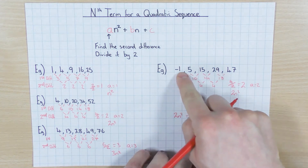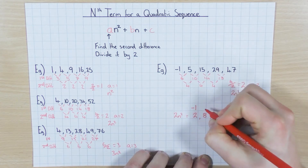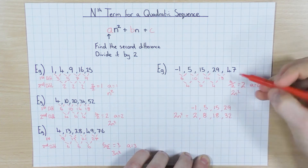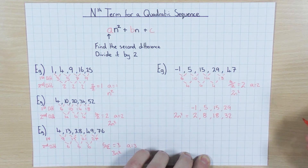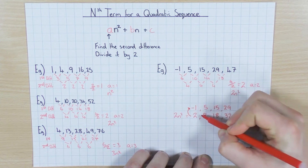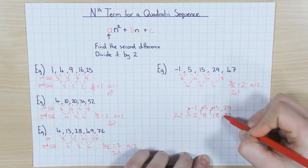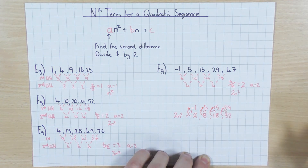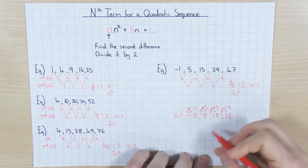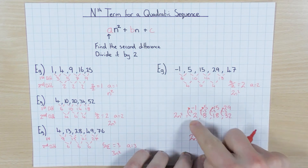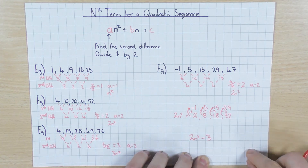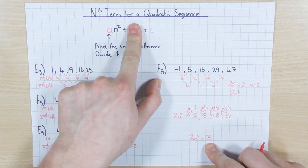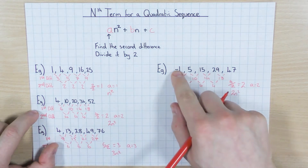I don't want that sequence — I want the original sequence. I'll write it above: minus 1, 5, 15, 29. Just like finding the nth term of a linear sequence, I compare them — how do I go from the sequence I've got so far to the sequence that I want? In each case it works out nicely because I take away 3 each time. So all I do is 2n squared and then take away 3.